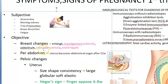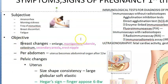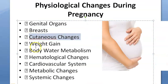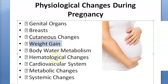For breast changes: the breast will enlarge, Montgomery's tubercle, colostrum, secondary areola, and erect nipple. Cutaneous changes include linea nigra and striae gravidarum. For weight gain, the net weight gain is around 11 kg. Rapid weight gain could be an indicator of preeclampsia, and a falling weight could indicate intrauterine growth restriction.